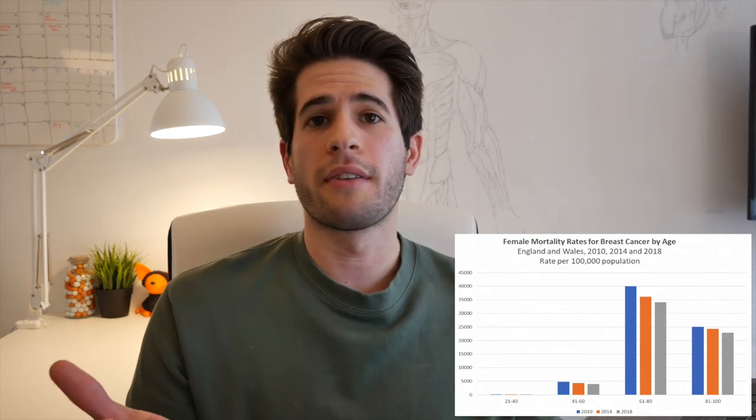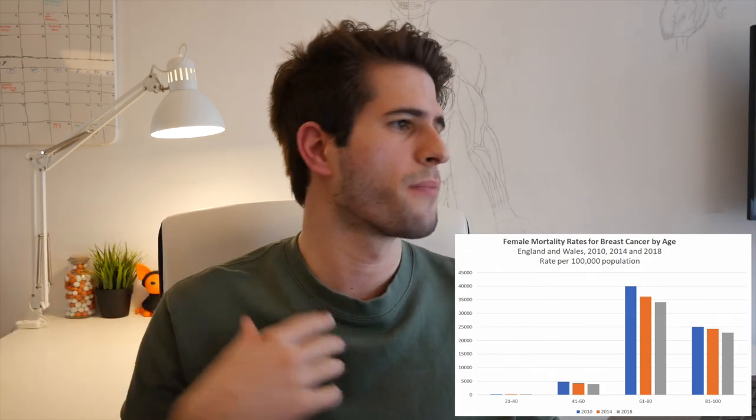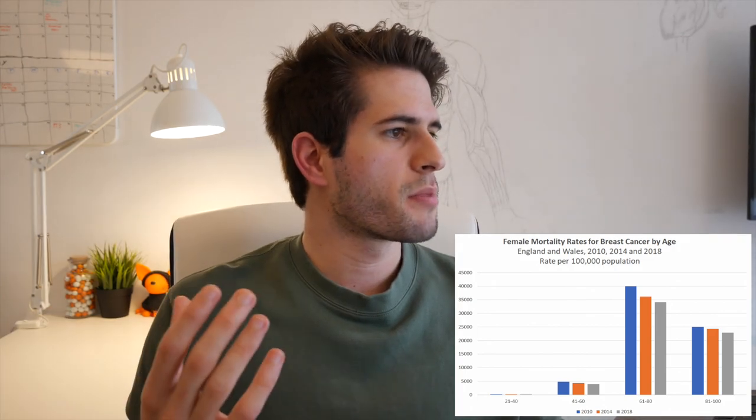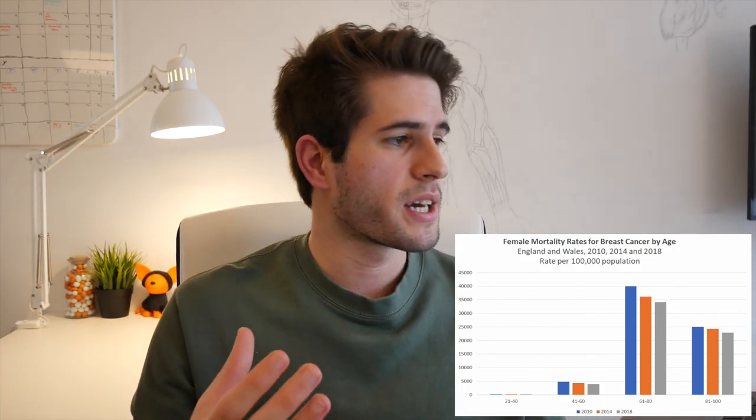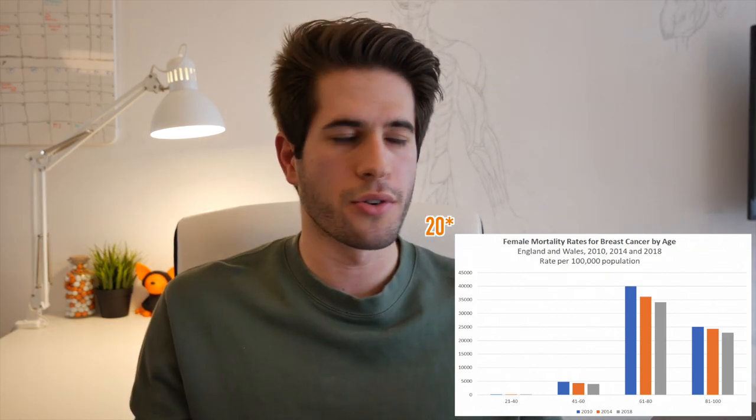When asked to describe a graph, state what you can see: what the title is, what the graph is describing, the axes, their units, and so on. The first thing to state is what kind of graph it is — bar graph, histogram, pie chart, scatter plot, etc. So for example: 'This is a bar graph that shows female mortality rates for breast cancer in England and Wales in 2010, 2014, and 2018. On the x-axis we can see four different age groups each with a range of 19 years, spanning from 21 to 100 years old. On the y-axis we can see the number of mortalities from 0 to 45,000.'